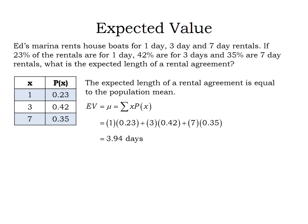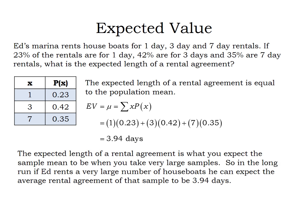So what does 3.94 days mean? That is our expected length of the rental agreement — if we take large samples, this is what we expect to happen on average. More often than not, Ed is going to rent out houseboats for three days, sometimes seven days, and less often for one day. But on average, if he has rental after rental after rental, we expect the length of the agreement to be 3.94 days.